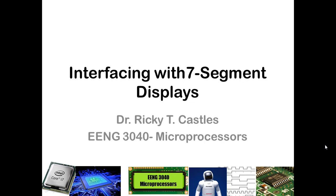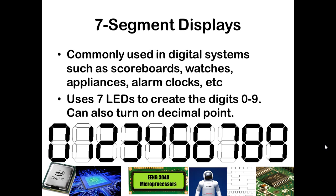In this video, we'll talk about how to interface a microcontroller with seven segment displays. Seven segment displays are commonly used in many different digital systems. Scoreboards can use them to indicate the score of the home team and the away team. Alarm clocks use them to show the time or what time your alarm is set for. They're called seven segment displays because they use seven segments made out of LEDs. You can light up each segment or turn them off to form the digits zero through nine.